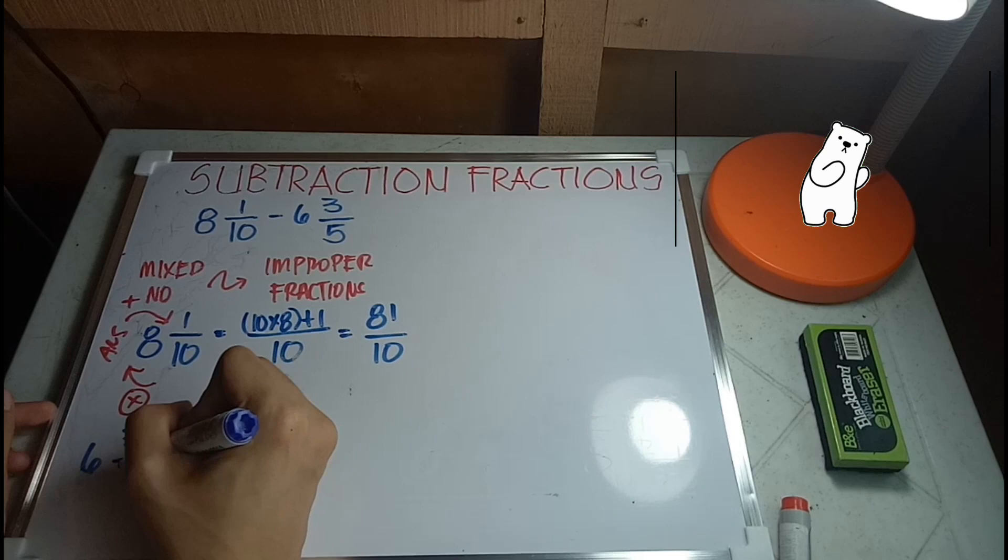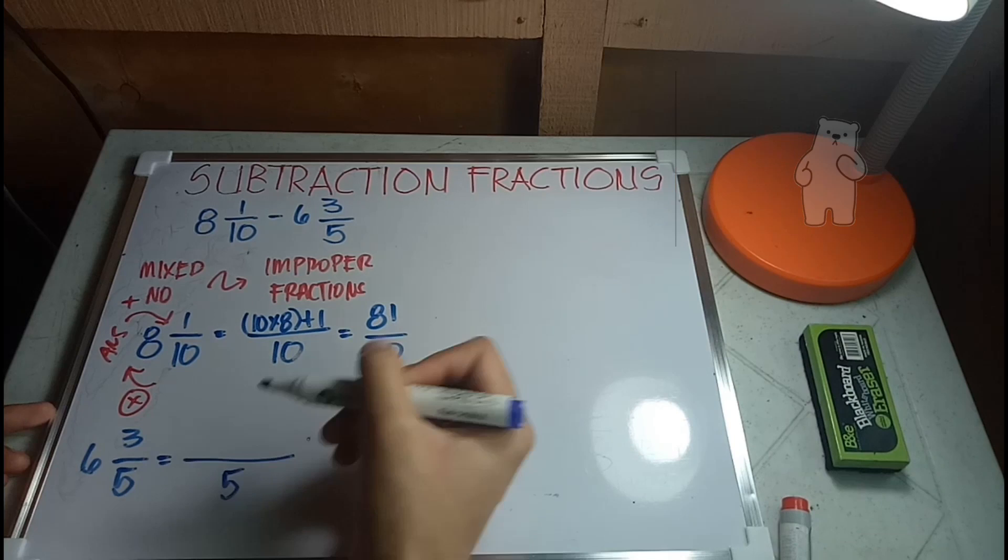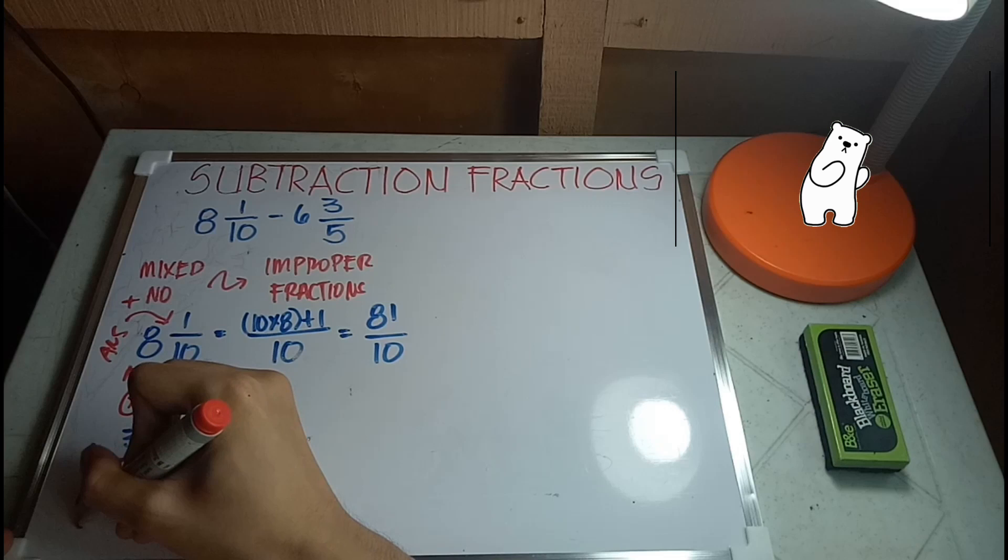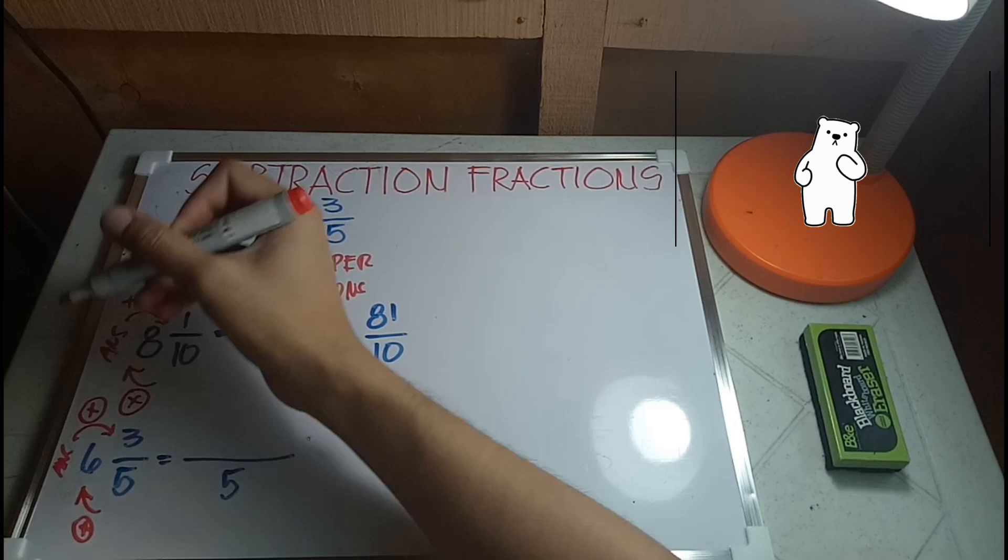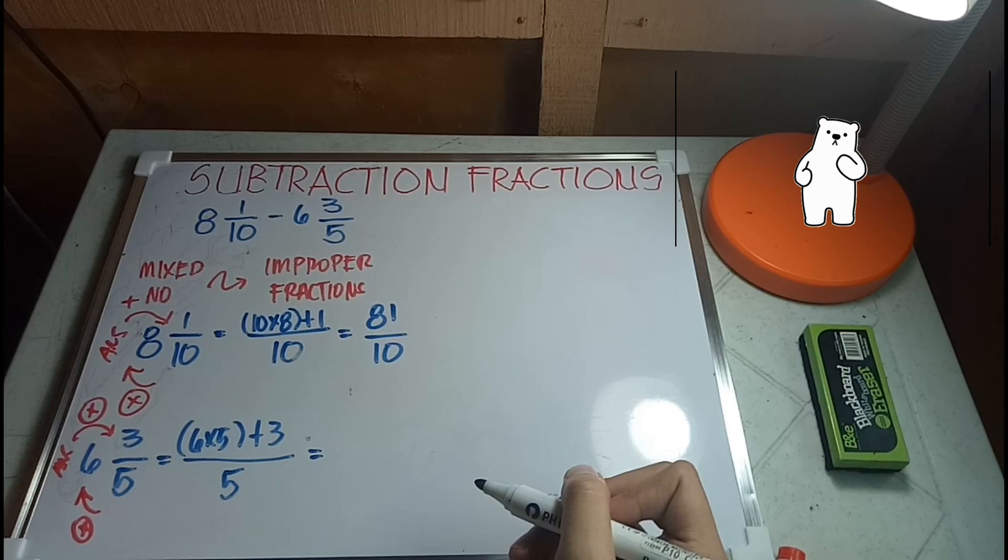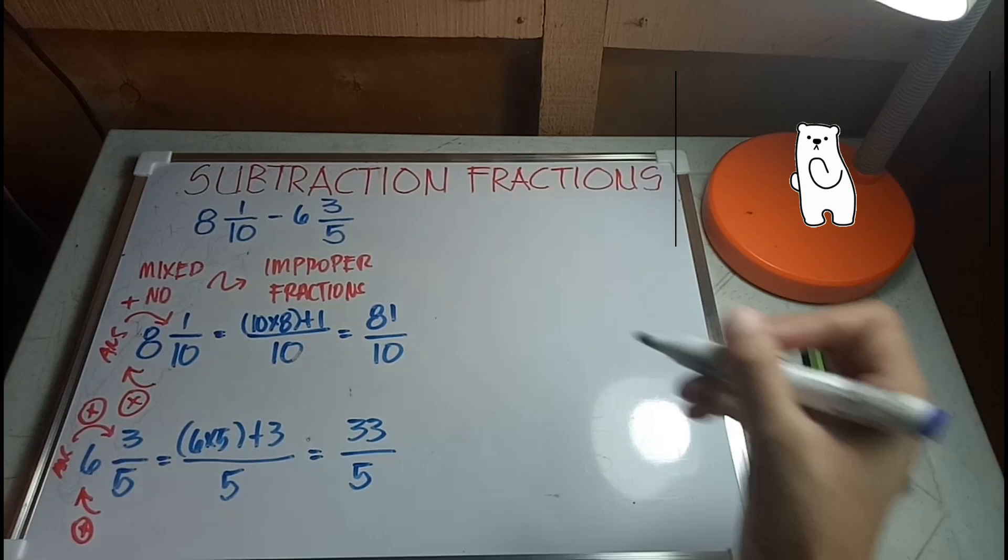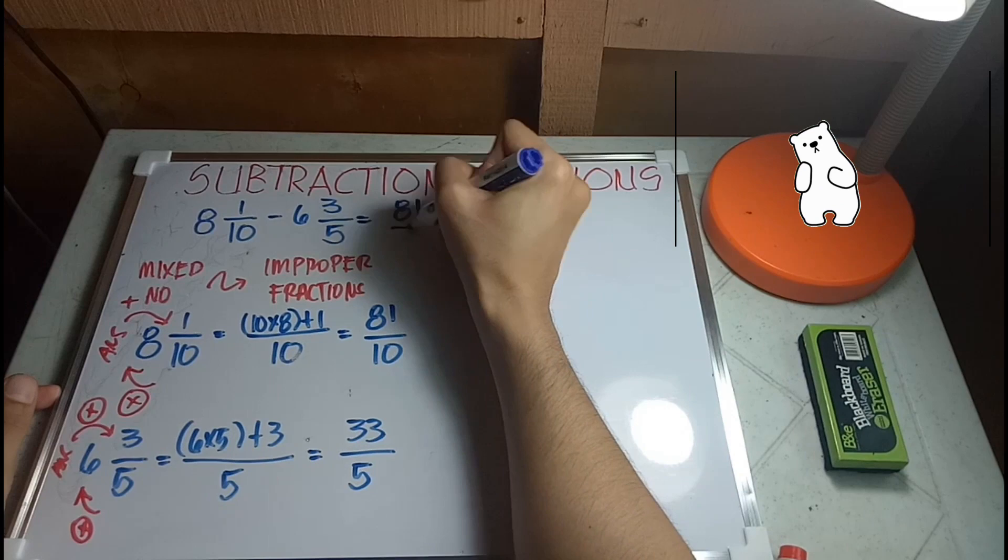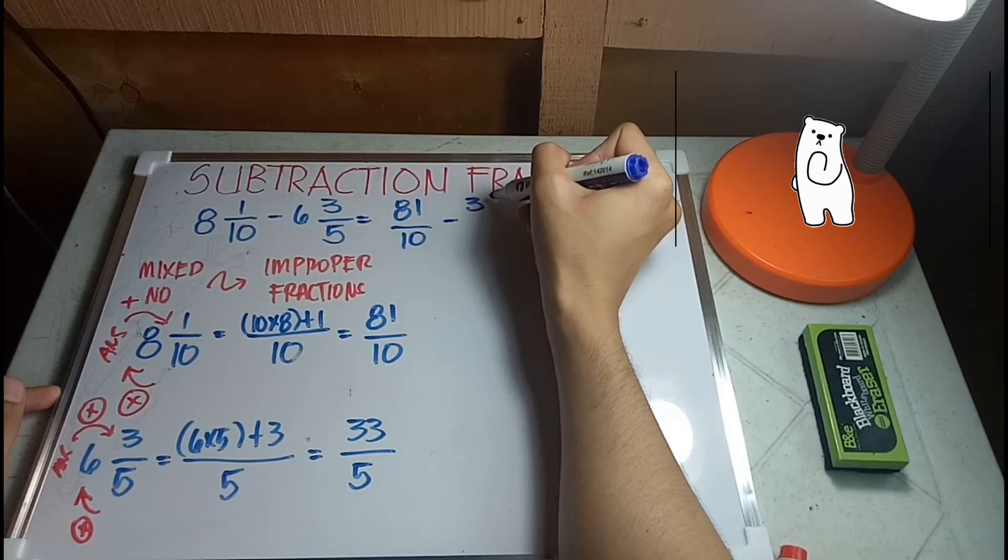Same thing with 6 and 3 over 5. Copy paste the denominator, copy 5. The answer will be added, so that would be 6 times 5 plus 3. 6 times 5 is 30 plus 3 is 33, 33 over 5. So this will be our new fraction: 81 over 10 minus 33 over 5.